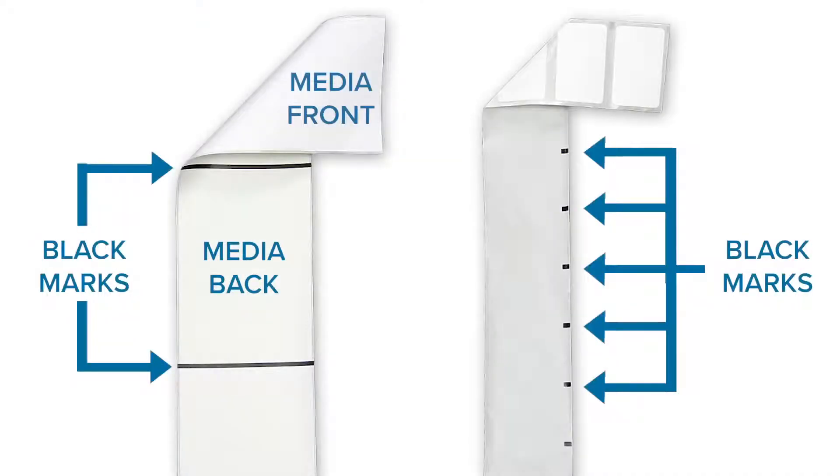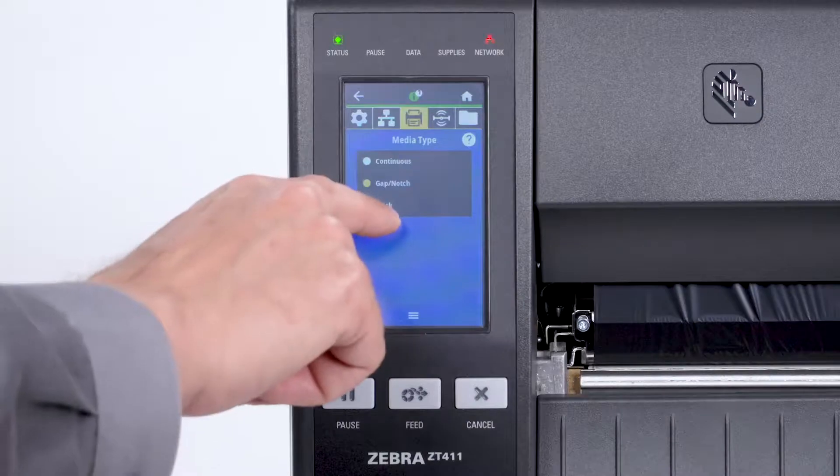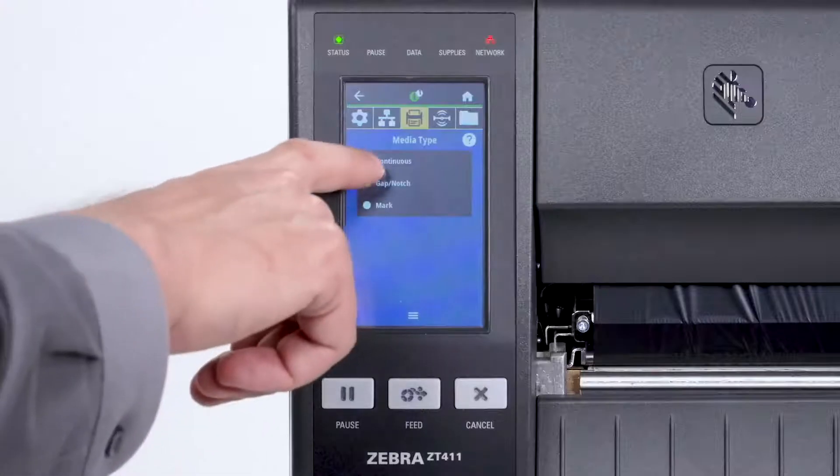If your media has a black mark on the underside of the media, select Mark in the menu. If your media is a continuous roll with no start position features, select Continuous.